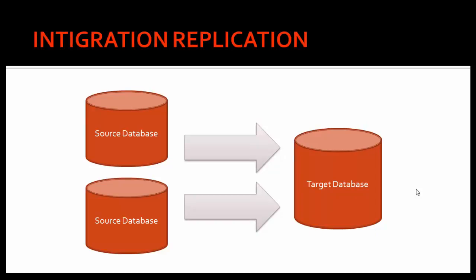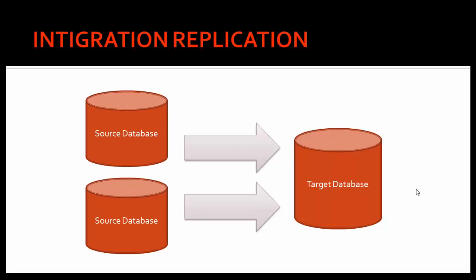The final type is consolidation replication, where you have two source databases and you want to replicate both into one target database. For example, one source is your sales database and another is your finance database. You want to generate reports from both, so you consolidate both sources into one target database — your reporting server. The target database then has both the sales data and the finance data available for report generation. These are the different types of replication topologies in GoldenGate.